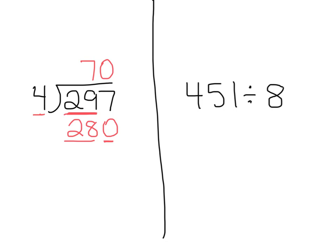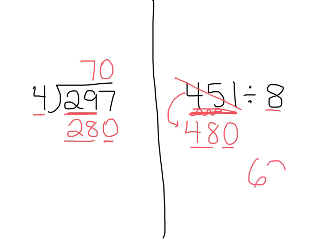Now let's look at the one on the right: 451 divided by 8. Does 8 divide into 4? No. Does 8 divide into 45? Yes, but not evenly. So I need to think of a compatible number. What can I change 451 to? What's close to 45 that 8 divides into? 48. So I'm going to change this to 480. I didn't round — I just found a number close to 451 that 8 will divide into. Now I've got my basic fact: 48 divided by 8 is 6, and then I add the 0. My estimate is 60.